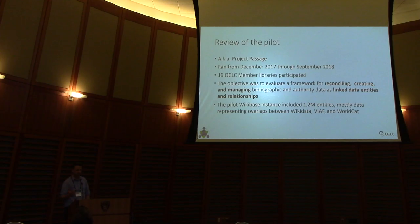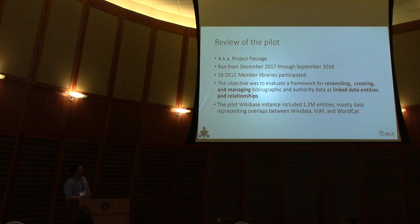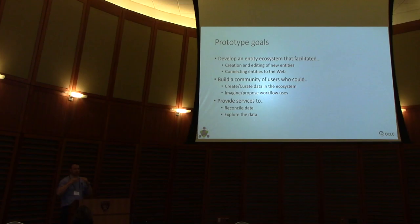Despite our best efforts to keep it internal, the project name 'Passage' got released into the environment. We thought it was pretty evocative in terms of passing into a new environment, and also having that important literary phrase as well. What's important here is to look at the bolded verbs around reconciling, creating, and managing bibliographic and authority data. One of the big promises was around identity management and linking persons and works. This project generated 1.2 million entities — many of them persons, but also places, works, and events — so it was broader than previous efforts.